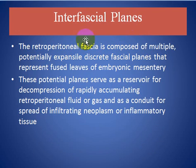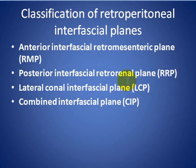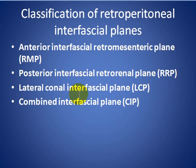Interfascial planes. The retroperitoneal fascia is composed of multiple potential expansile discrete fascial planes that represent fused leaves of the embryonic mesentery. These potential planes serve as reservoirs for decompression of rapidly accumulating retroperitoneal fluid or gas, or act as a conduit for spread of infiltrating neoplasm and inflammatory tissue. We can classify the retroperitoneal interfascial planes into four parts: anterior interfascial retroperitoneal plane, posterior interfascial retroperitoneal plane, lateral cone interfascial plane, and combined interfascial plane.